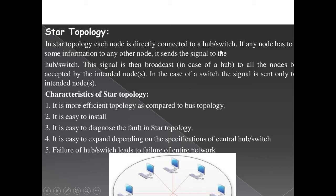The advantage of a switch over a hub is that when any signal is given to a hub, the hub gives it to all nodes. But a switch is an intelligent hub - it sends information only to the intended node. This is a common exam question: why is a switch called an intelligent hub, or what is the difference between a switch and a hub? Characteristics of star topology: it is more efficient than bus topology, easy to install, easy to diagnose faults, and easy to expand depending on the specifications of the central hub or switch.